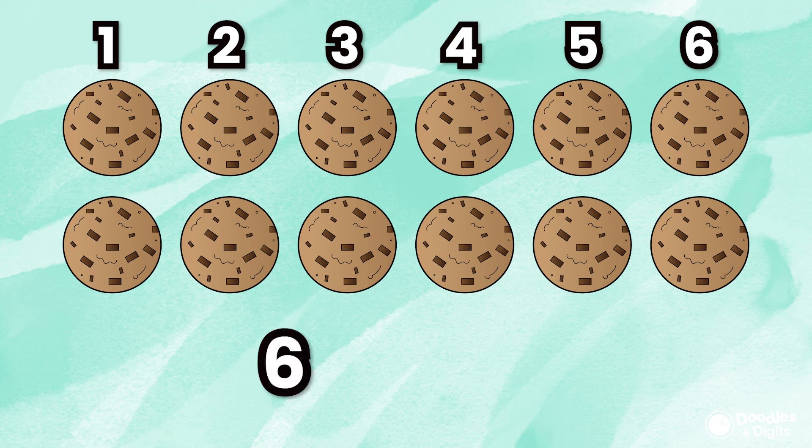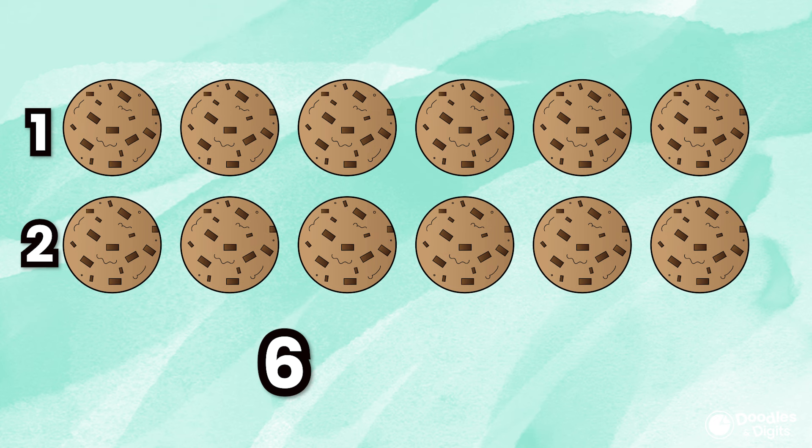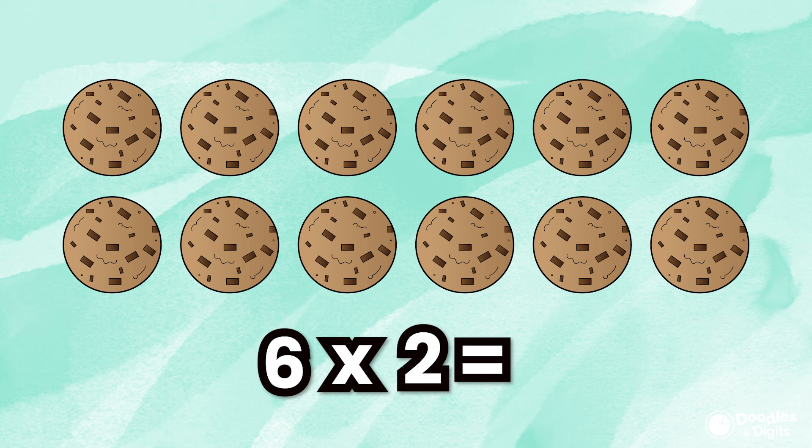Next, we're going to look at the rows. There are 2 rows of cookies. So our equation matching this array is 6 times 2, which equals 12. So if you counted every single cookie in this array, there would be 12 cookies.